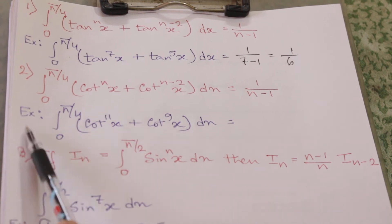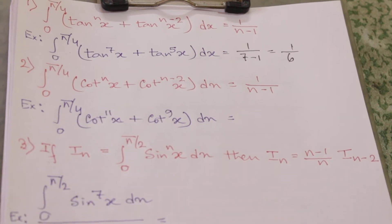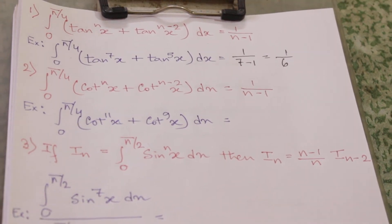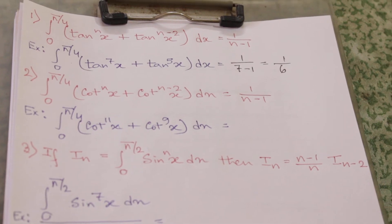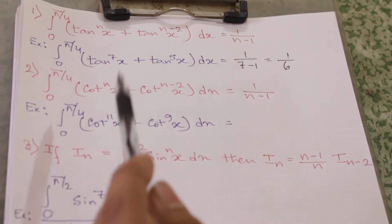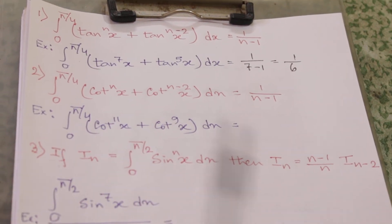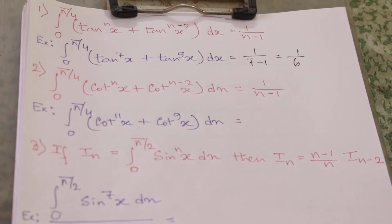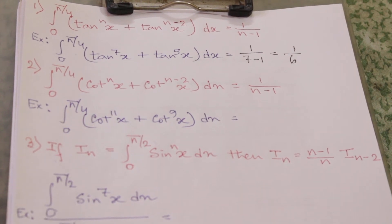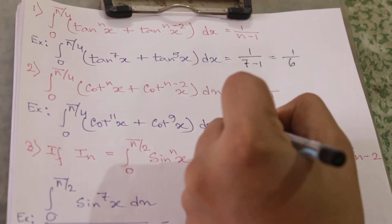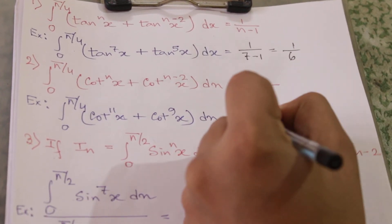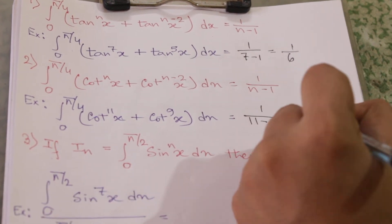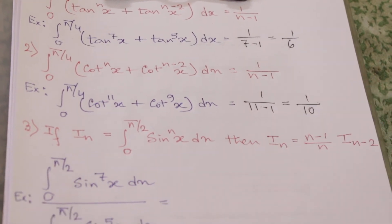Example: integral from 0 to π/4 of cot^11(x) + cot^9(x) dx. Comparing, n = 11 and n-2 = 9, so these match. The final answer is 1/(11-1) = 1/10.